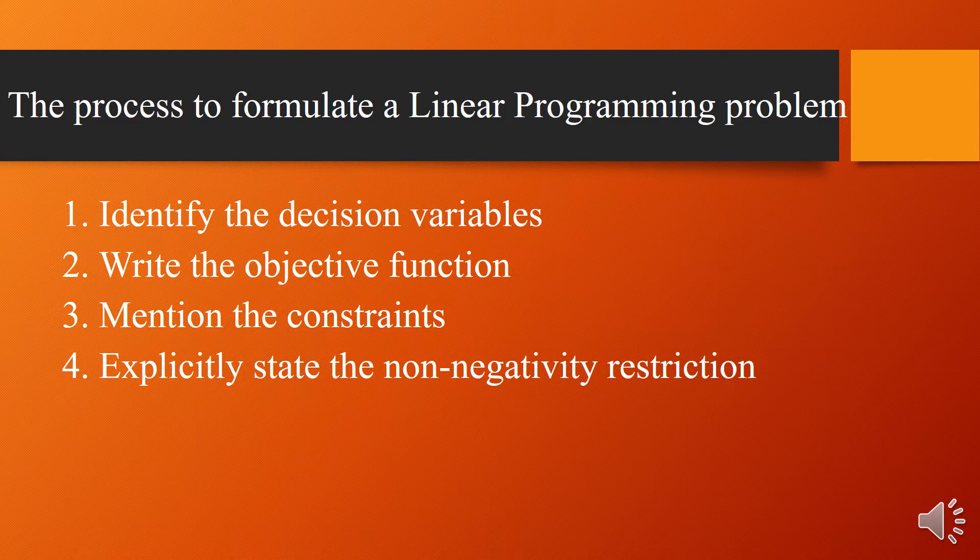The process to formulate a linear programming problem involves four steps: first, identify the decision variables; second, write the objective function; third, mention the constraints; and fourth, explicitly state the non-negativity restriction. These are the four important steps to follow when formulating a linear programming problem.